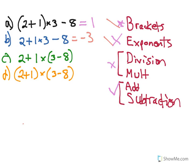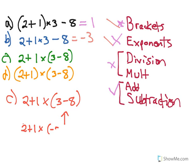Let's look at part C. 2 plus 1 times 3 minus 8 in brackets. So again, we've got multiplication, but first we're always going to focus on the brackets. So 2 plus 1 times, that's all going to stay the same, and our bracket we're going to solve as negative 5.